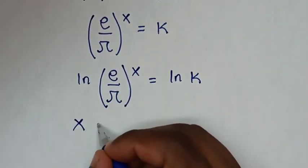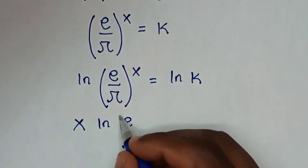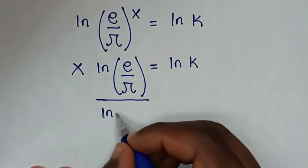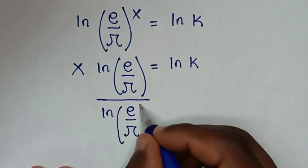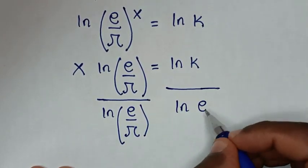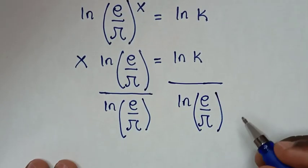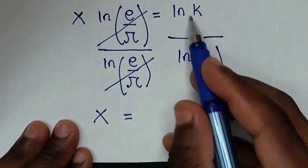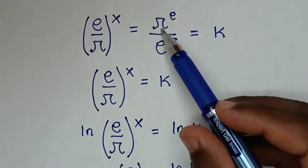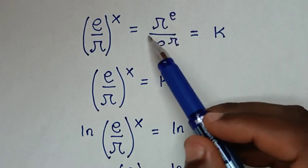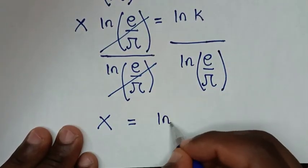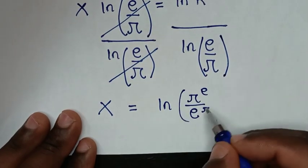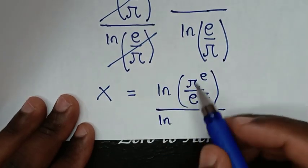Applying the log power rule, the exponent x moves to the front: x · ln(e/π) = ln(k). We then divide both sides by ln(e/π), so x = ln(k) / ln(e/π). Substituting k = π^e / e^π, we get x = ln(π^e / e^π) / ln(e/π).